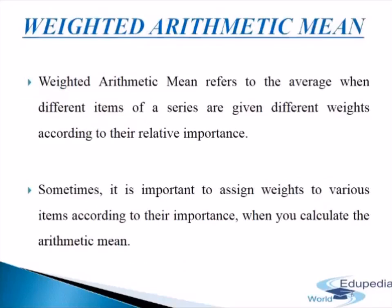Weighted arithmetic mean refers to the average when different items of a series are given different weights according to their relative importance. In the computation of simple arithmetic mean, it is assumed that all items in the series are of equal importance. However, there are situations where observations are not of equal importance. If all items are not of equal importance, then simple arithmetic mean will not be a good representative of the data. Hence, weighting of different items becomes necessary, with more important items assigned more weight.